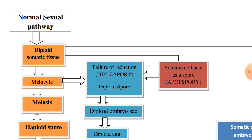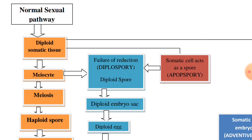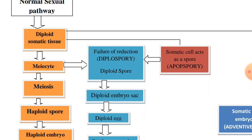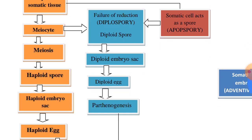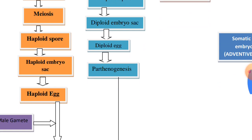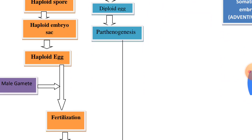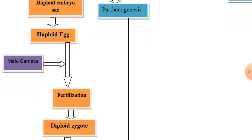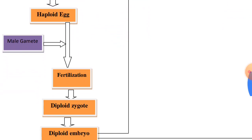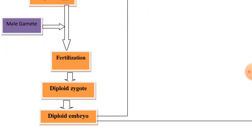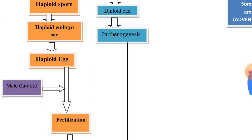This is showing the normal sexual pathway taking place in plants and the apomyctic pathways. In the normal sexual pathway, the diploid somatic tissue forms the meiocyte, that is the megaspore mother cell, where meiosis forms the haploid megaspores. The functional megaspore forms the haploid embryo sac in which there is a haploid egg cell. The male gamete fuses with the haploid egg — that is, the female gamete — fertilization forms the diploid zygote, and this diploid zygote develops to form the diploid embryo.